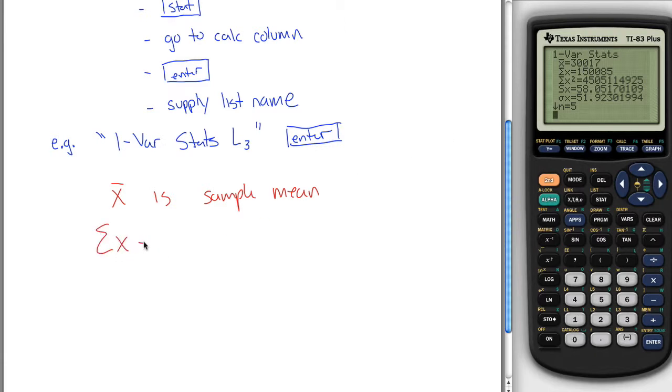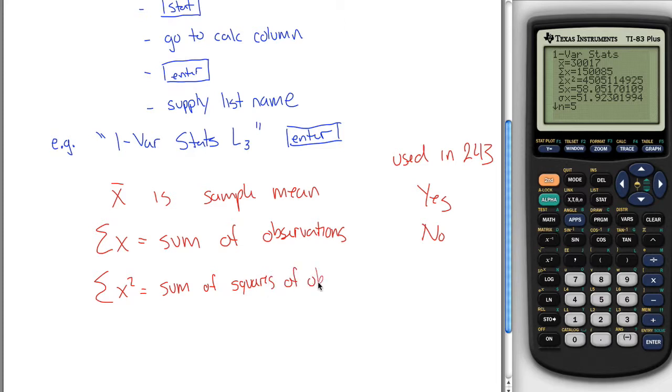Sigma X is the sum of your observations. Let's make this a checklist. Used in 243. This one is. Then you can also get the sum of X squared, sum of squares of observations. Not too important for 243.